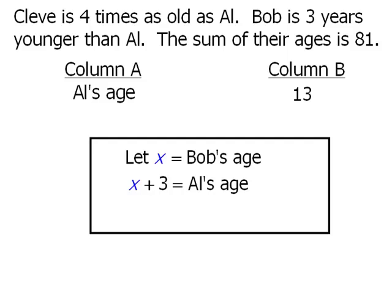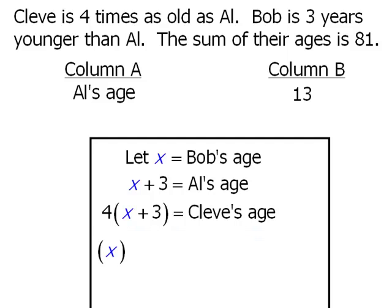So to get Cleve's age we'll take Al's age and multiply it by four. Now the question also tells us that the sum of their ages is 81. So if we take Bob's age and add Al's age and add Cleve's age, the result will be 81.